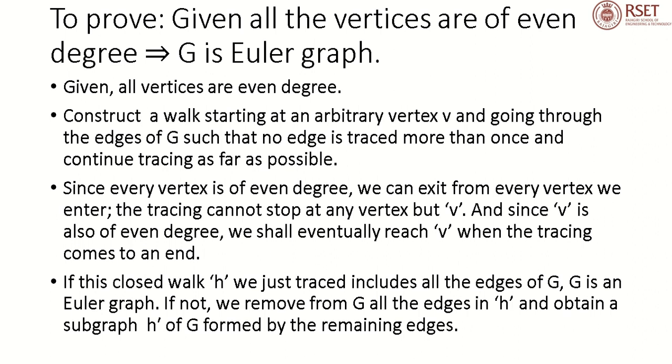And since V is also of even degree, we shall eventually reach V when the tracing comes to an end. If this closed walk H we just traced includes all the edges of G, G is an Euler Graph. If not, we remove from G all the edges in H and obtain a subgraph H' of G formed by the remaining edges. This will be evident in the next slide, how we can remove the traced edges to get the subgraph H'.